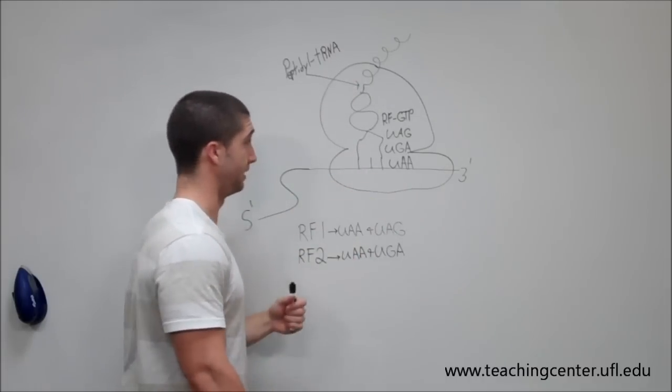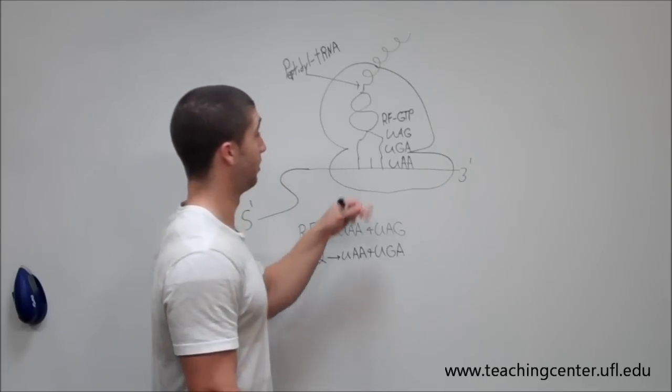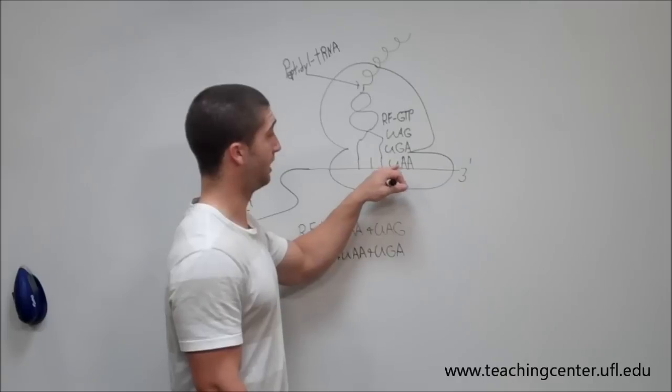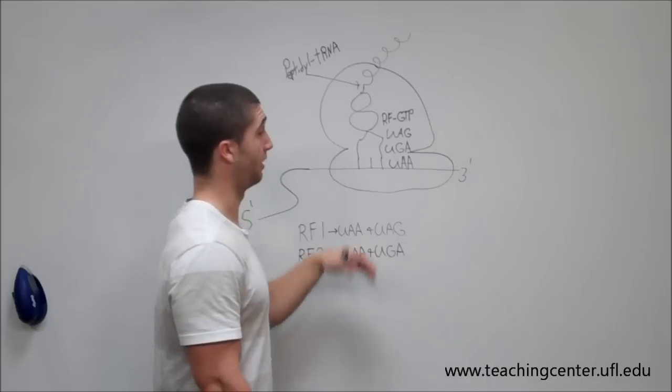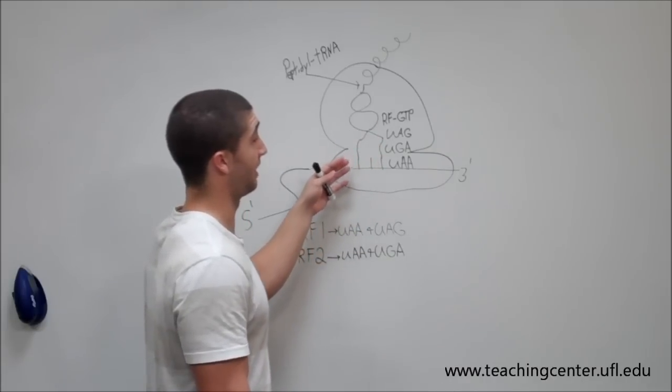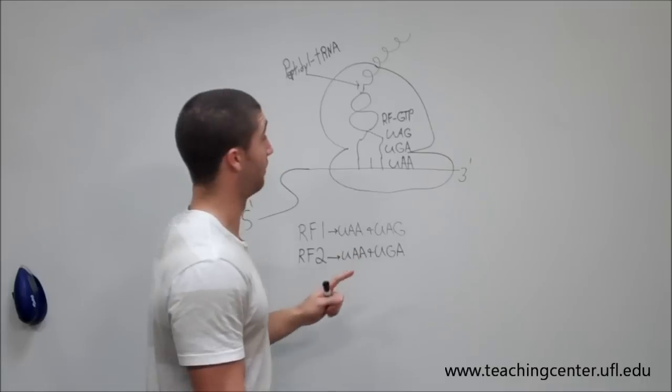Your A-site is empty. So the first step in termination is the ribosome is going to come across either a UAA, a UGA, or a UAG stop codon located on the mRNA. Those are the three stop codons that an mRNA can have, it's only going to have one of them.